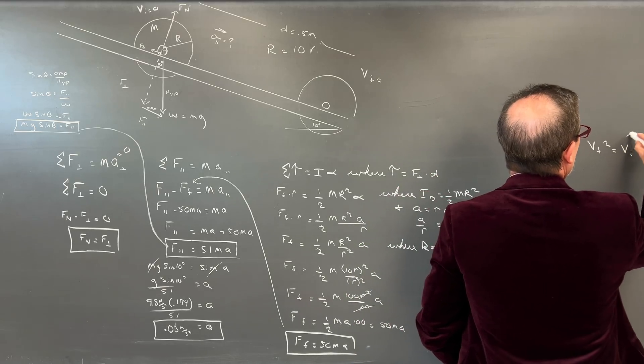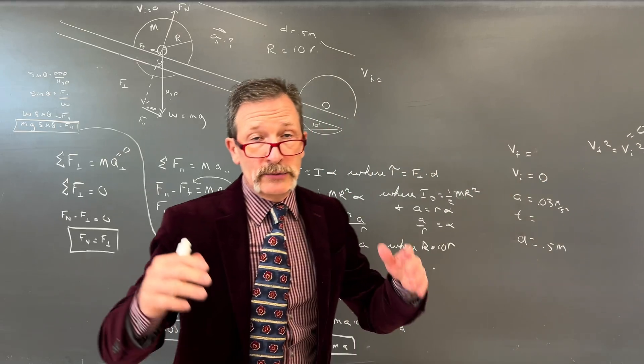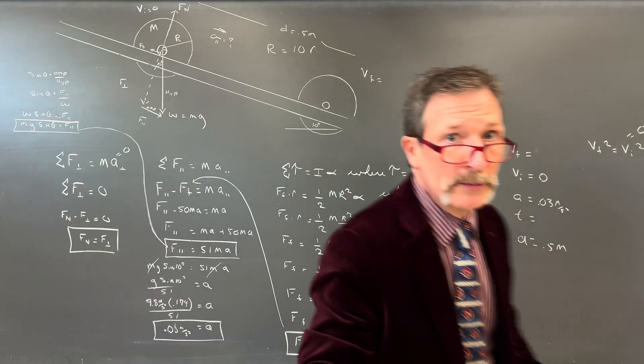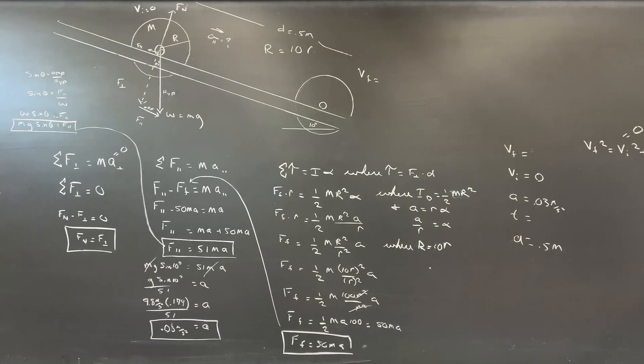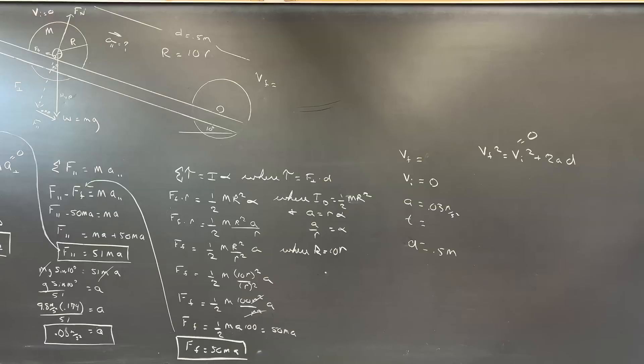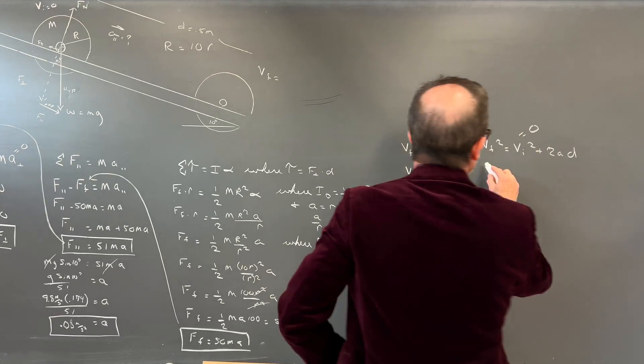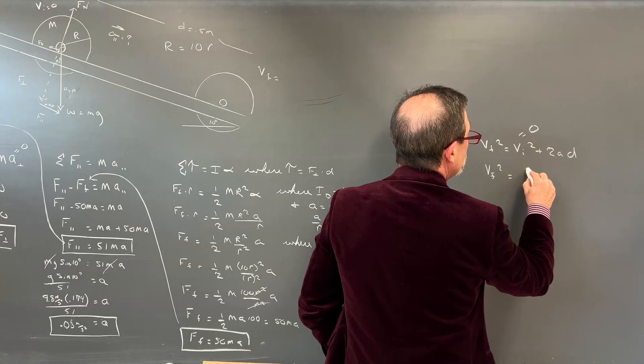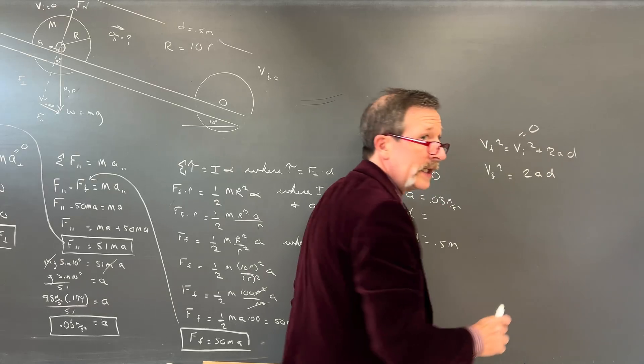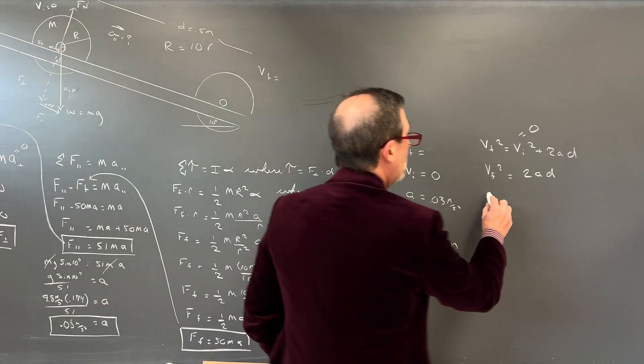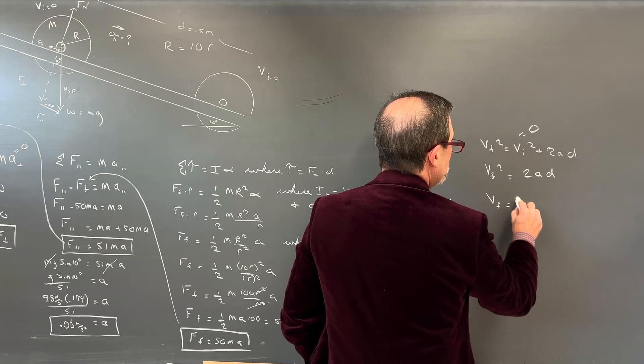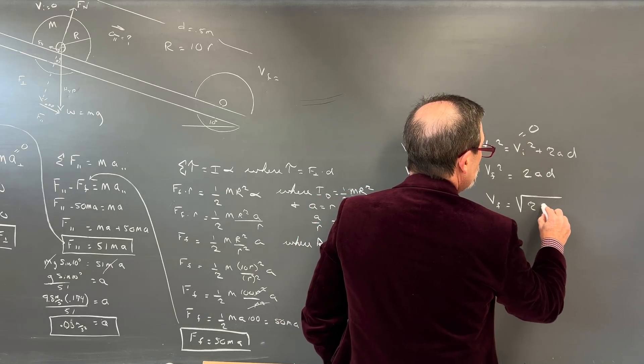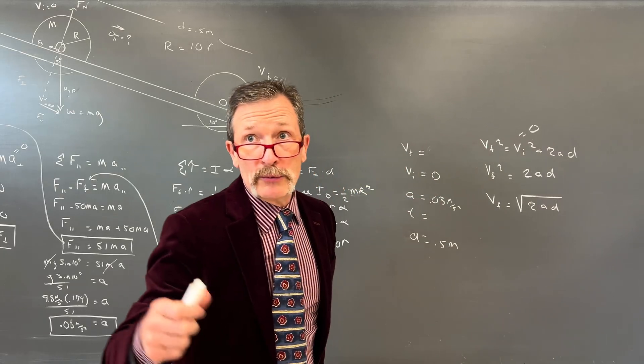And we know that it's going to start at a velocity equal to 0, and the acceleration is right here, 0.03 meters per second squared. Let's use our distance of a half a meter, 0.5 meters.